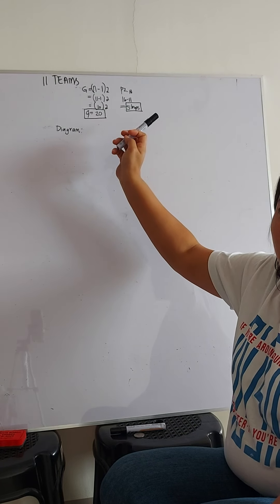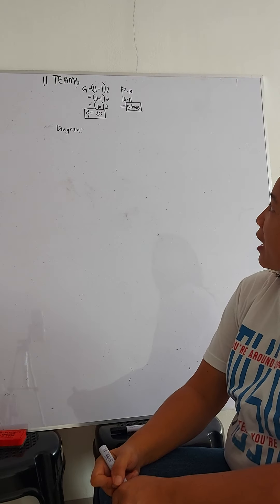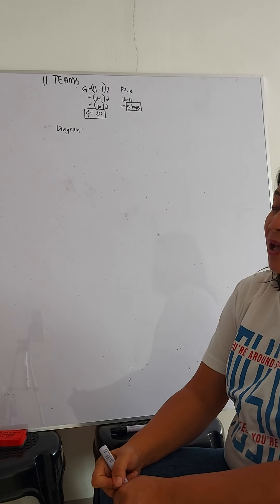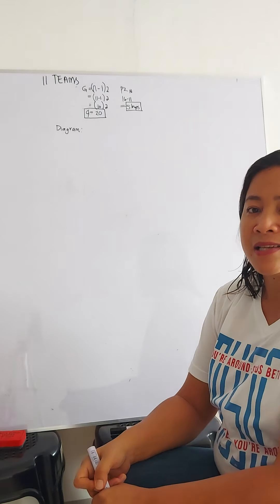And now let's proceed to the diagram. So with this, we have 5 byes among 11 competitors. So let's see the tournament.